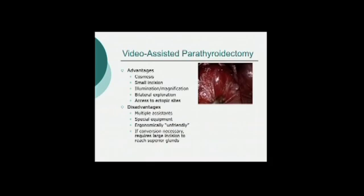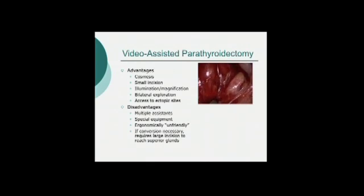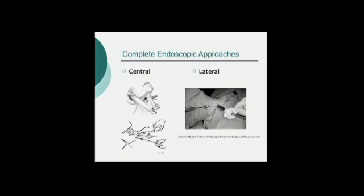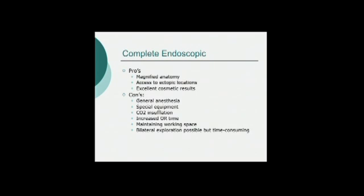Here you can see a nice dissection — an example of the recurrent laryngeal nerve and the beautiful magnification you can get with this endoscopic approach. In terms of the cervical techniques, the first are the complete endoscopic techniques, with a whole variety of different descriptions: central approaches, lateral approaches that use a completely insufflation-based technique. The real pros are magnified anatomy and access to ectopic locations, with the main reason for doing this being better cosmetic results.